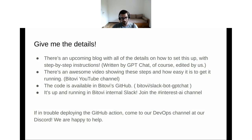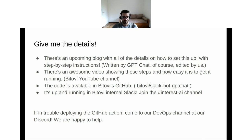There's an upcoming blog with every detail on how to set this up. It's written by ChatGPT, with some editing done by us. There's also an awesome video showing these steps step by step, showing how easy it is to get it up and running — which, by the way, is in the Bitovic YouTube channel. The code for you to grab and fork is available in Bitovic's GitHub. In fact, it's up and running in the Bitovic internal Slack. If you'd like to poke the bot, you can just join the Interest AI channel. And, of course, if you have any trouble or questions, you can come and talk with us in DevOps.